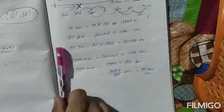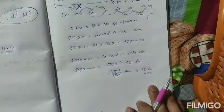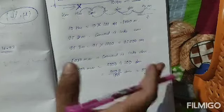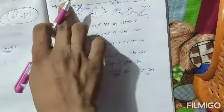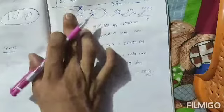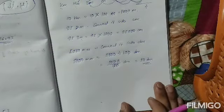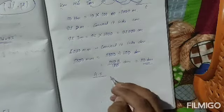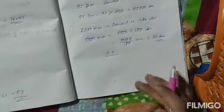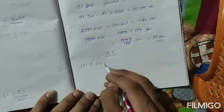Similarly this applies to other units too. For kg to hectogram, it is the same — just replace 'm' with 'g'. And replace 'm' with 'l' in the case of volume. With this concept, let us do exercise 4.3.